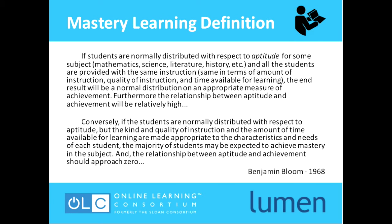Benjamin Bloom defined mastery learning in 1968. His thoughts were: if students are normally distributed with respect to aptitude for some subject — mathematics, science, literature, history, etc. — and all students are provided the same instruction, in terms of amount of instruction, quality of instruction, and time available for learning, the end result will be a normal distribution on an appropriate measure of achievement.